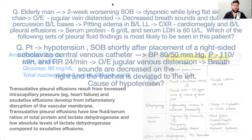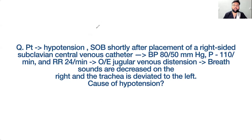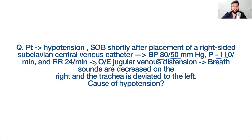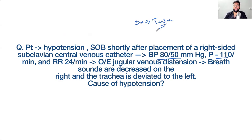A patient develops hypotension and shortness of breath shortly after placement of a right-sided subclavian central venous catheter. BP is 80/50, pulse 110. There is jugular venous distension, breath sounds are decreased on the right, and the trachea is deviated to the left. Diagnosis: tension pneumothorax.